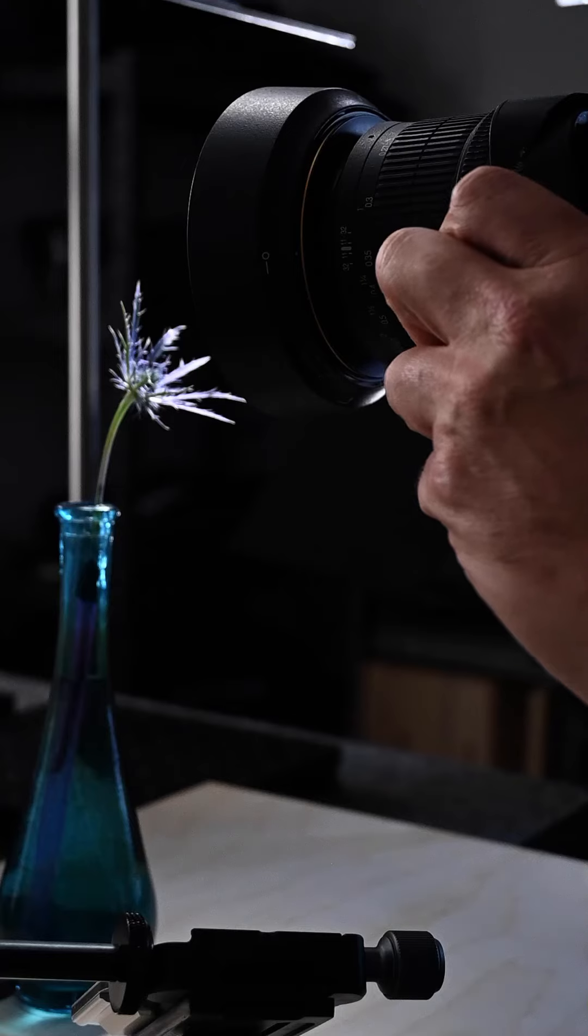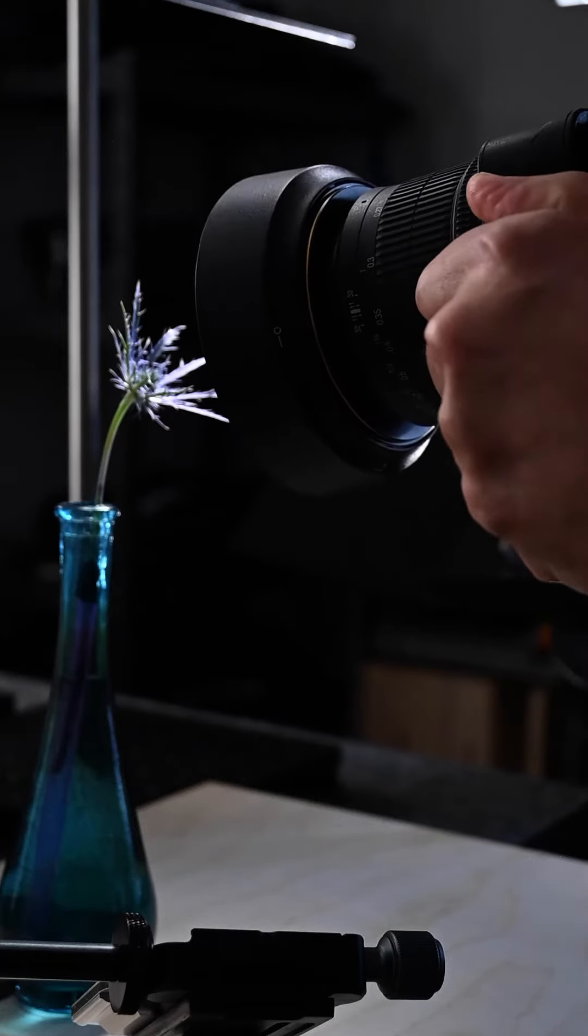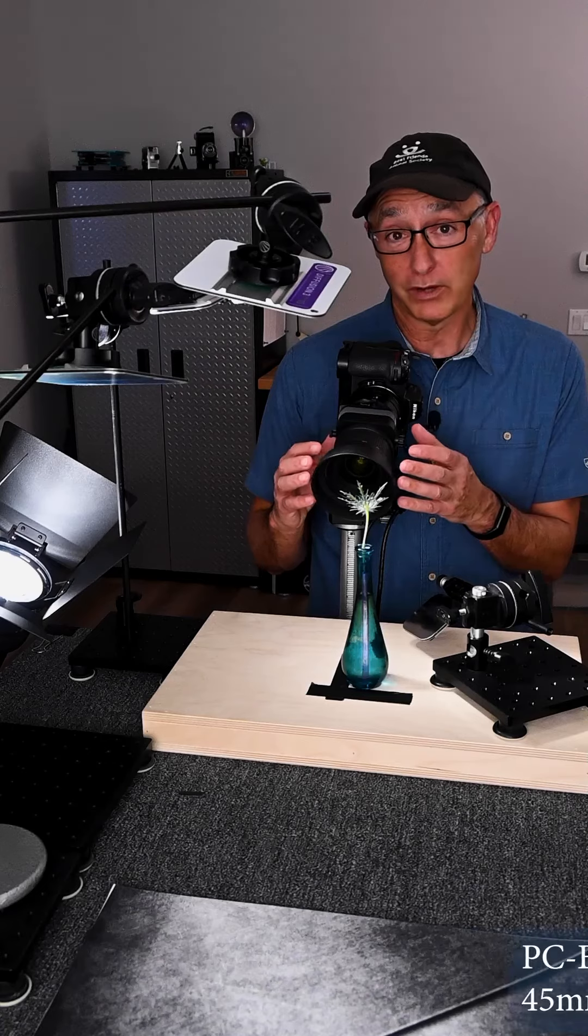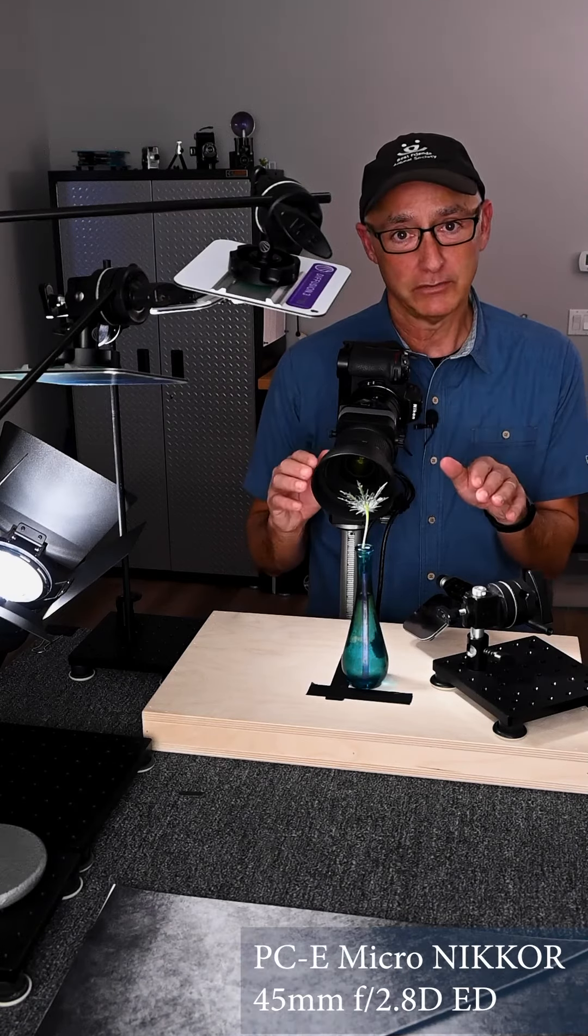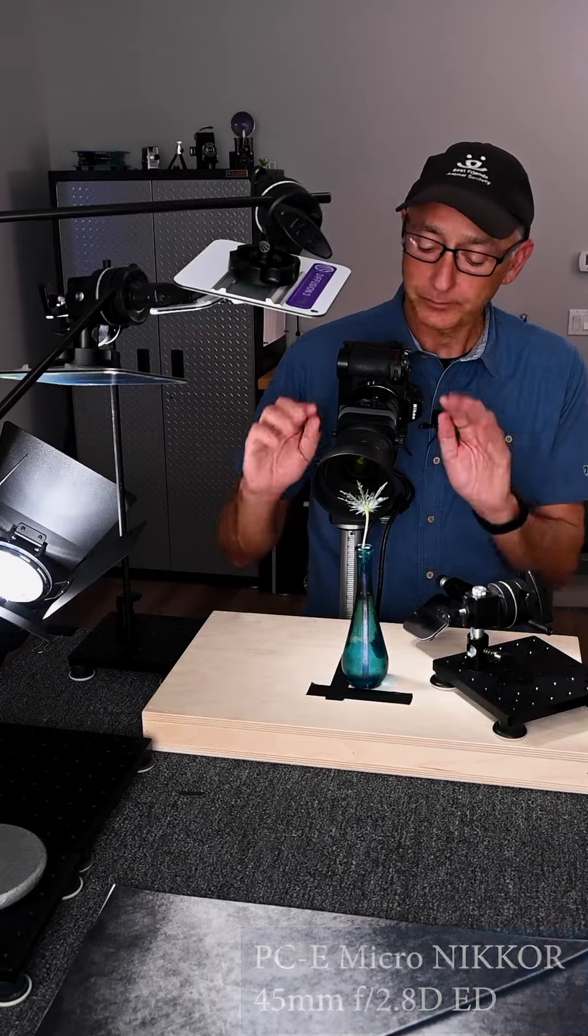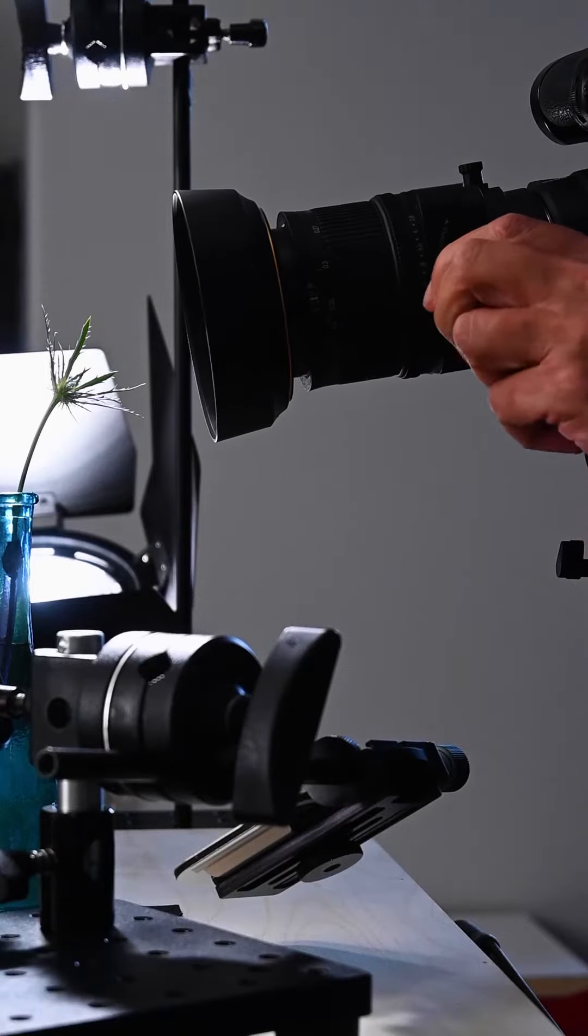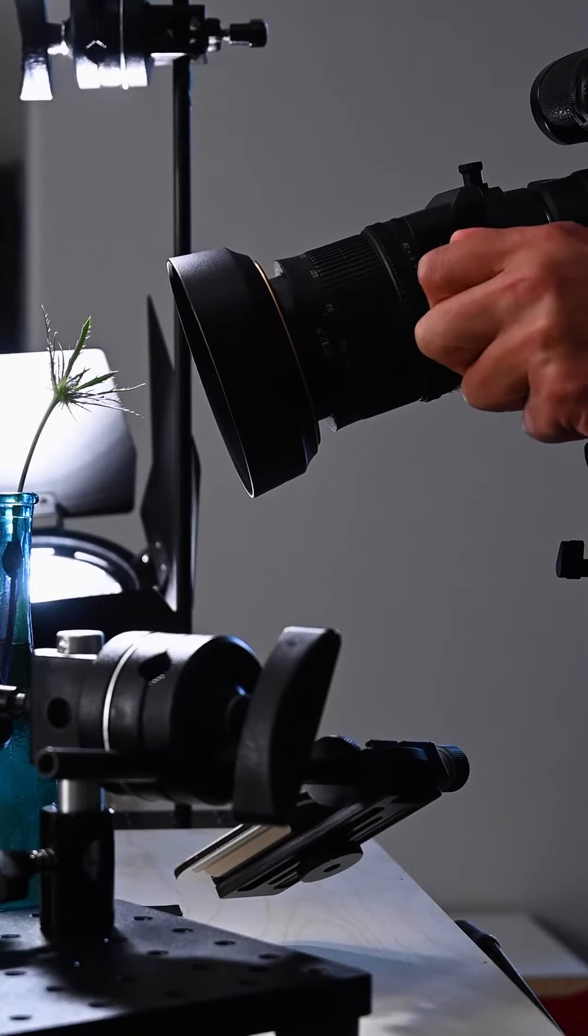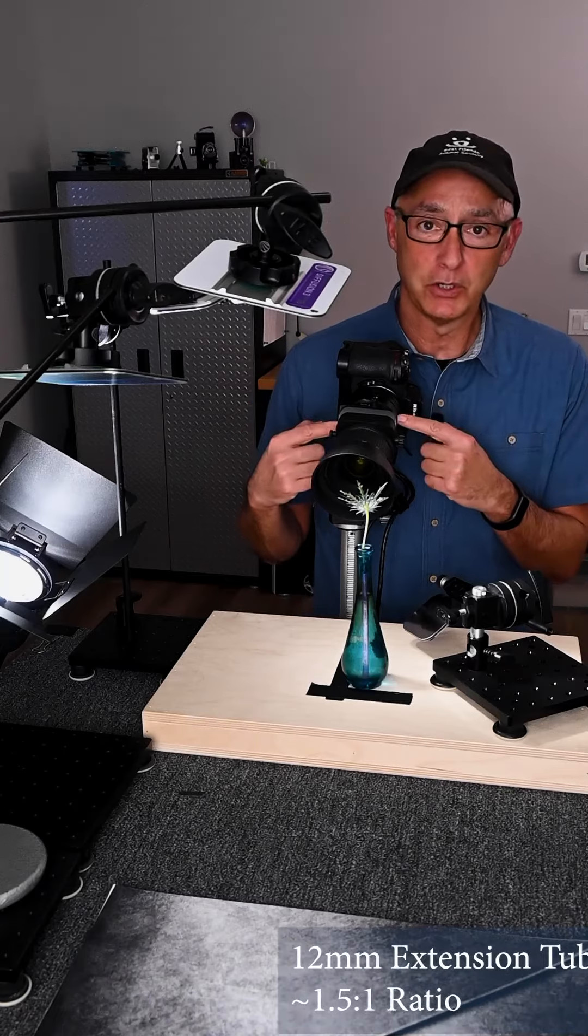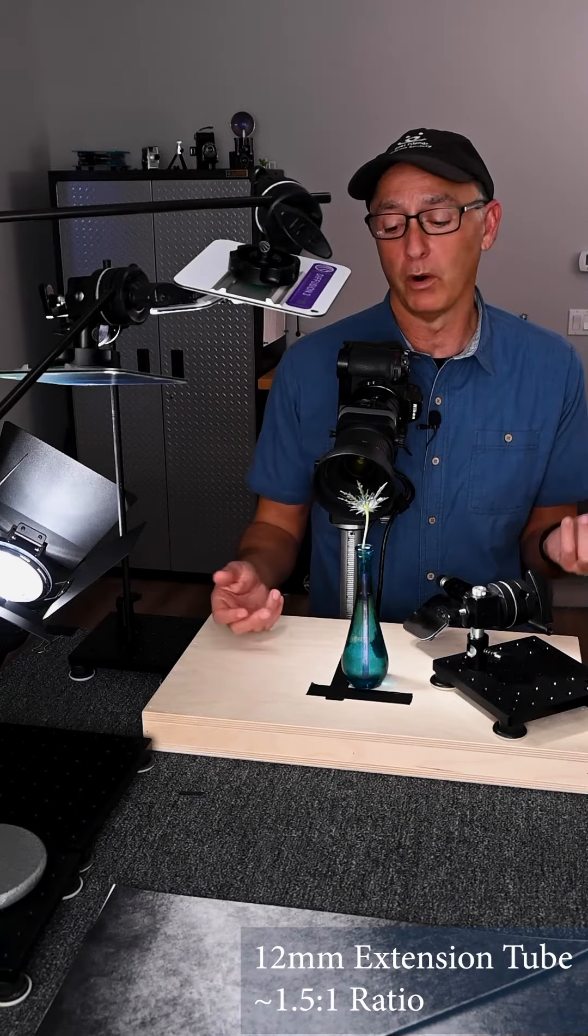First is the lens work. I wanted to control the depth of field and the plane of focus. So I'm using a 45 millimeter tilt shift lens or perspective control lens. It is tilted down a little bit so the plane of focus matches the flower. I have an extension tube on here so I can get close to 1 to 1 or macro.